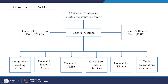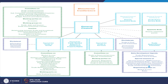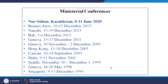The WTO structure has the Ministerial Conference at the top, meeting every two years, followed by the General Council, then the Trade Policy Review Body and Dispute Settlement Body. Under the councils are committees, working groups, the Council for Trade in Goods, the Council for TRIPS (intellectual property rights), the Council for Services, TRIMS (investment measures) and negotiation committees. This structure with all its committees and what they cover — including market access, agriculture and more — is detailed in the organizational chart.